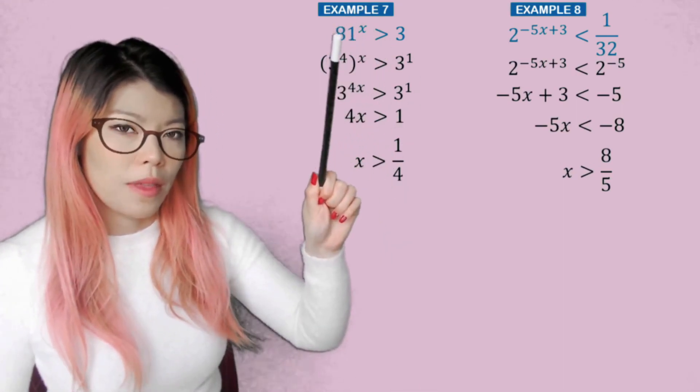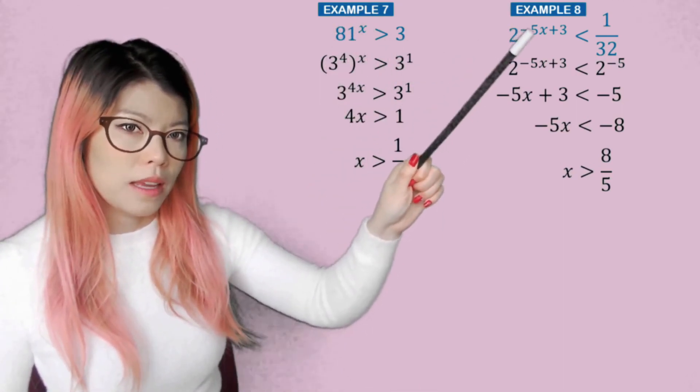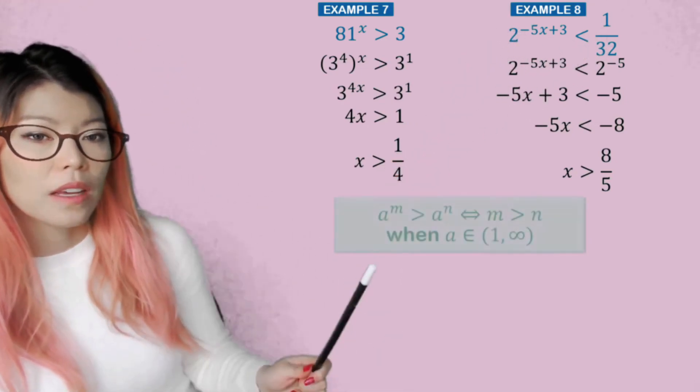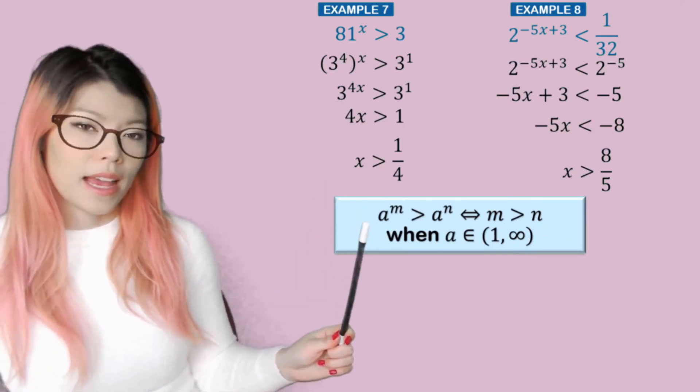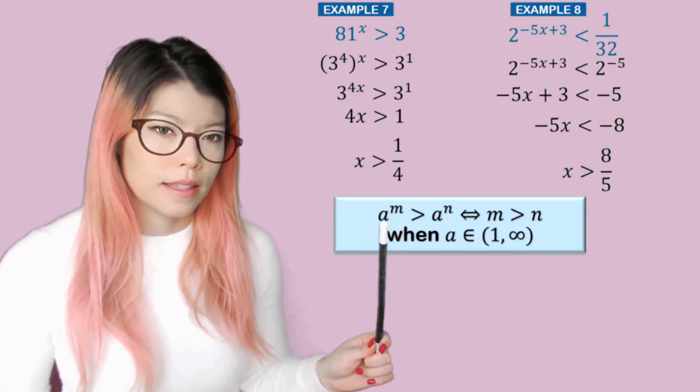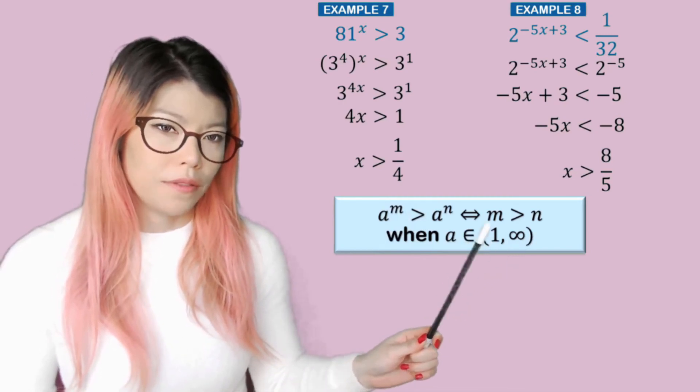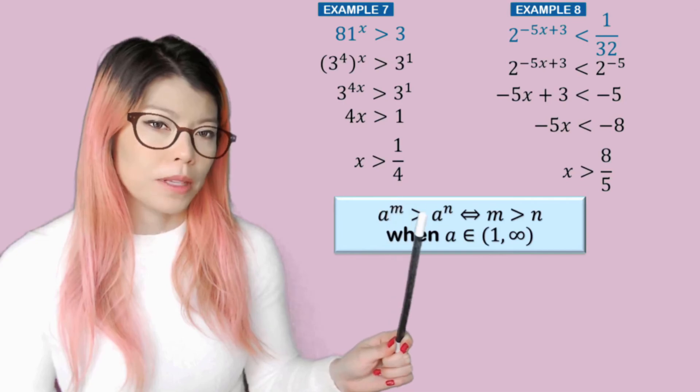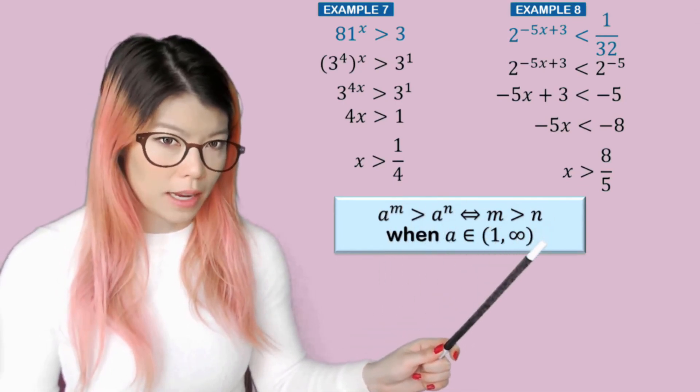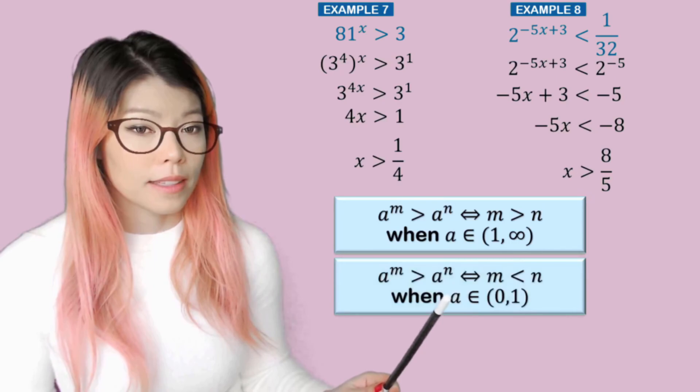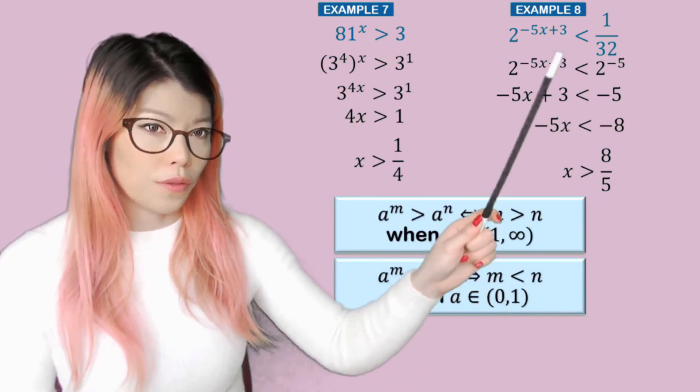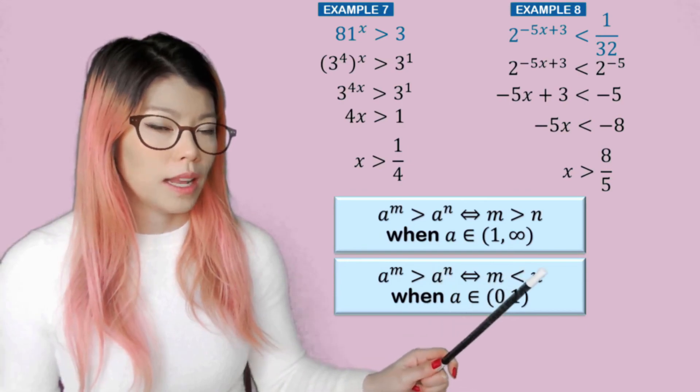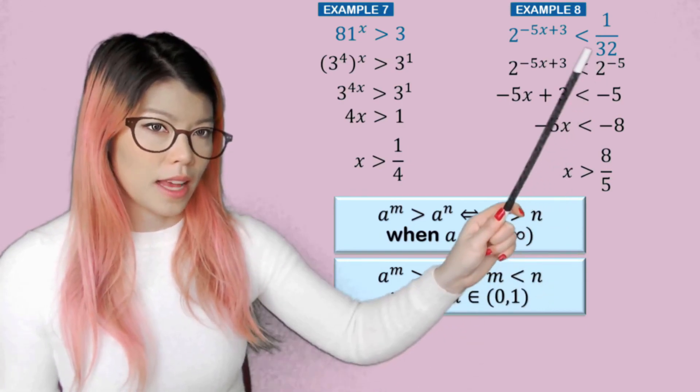So notice that here we have the basis as whole numbers, but here the base is a fraction. So 2 to the negative, remember it's 1 over 2, right? So we can summarize this as when the bases are greater, so between 1 and infinity, so then if a^m is greater than a^n, then m is also greater than n. But when the bases are between 0 and 1, so a fraction, then if you have a^m greater than a^n, then m will be less than n. See, this sign changes.